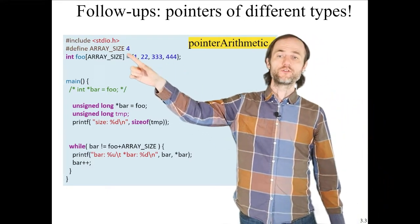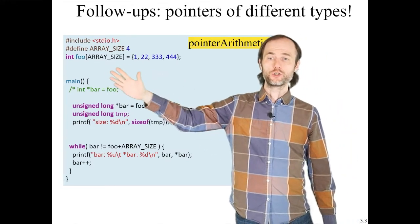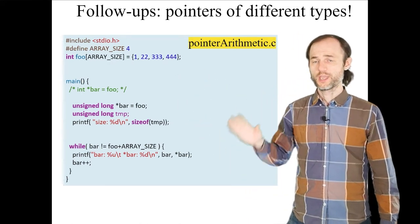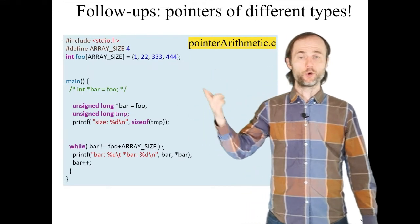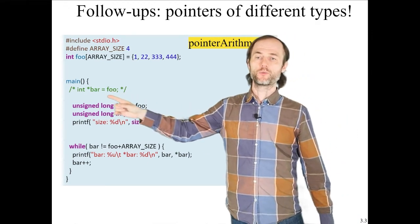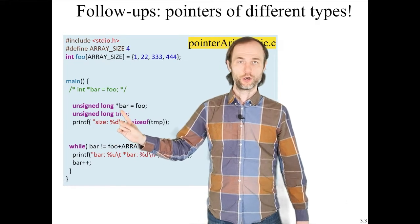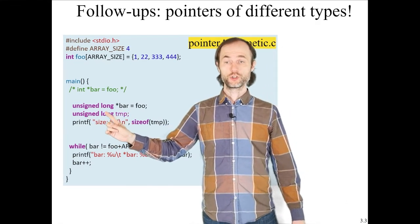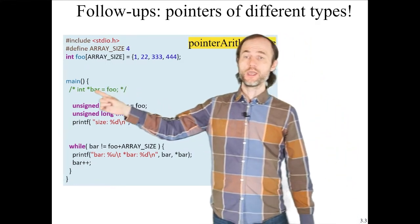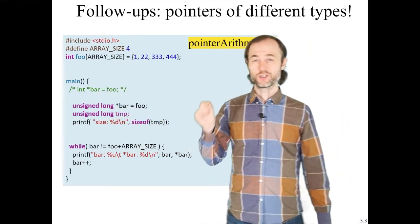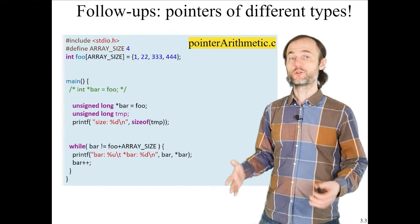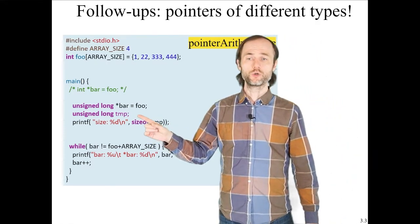As before, we defined an array size of four elements assigned to 1, 2, 3, and 4. However, instead of using 'int* bar = foo', we use a bar pointer of a different type — unsigned long, which is twice as large in memory as an integer. We also introduce a temporary variable of the same type to evaluate the number of bytes it takes in memory, and we will see that the size of unsigned long is 8 bytes, twice the size of a 4-byte integer.